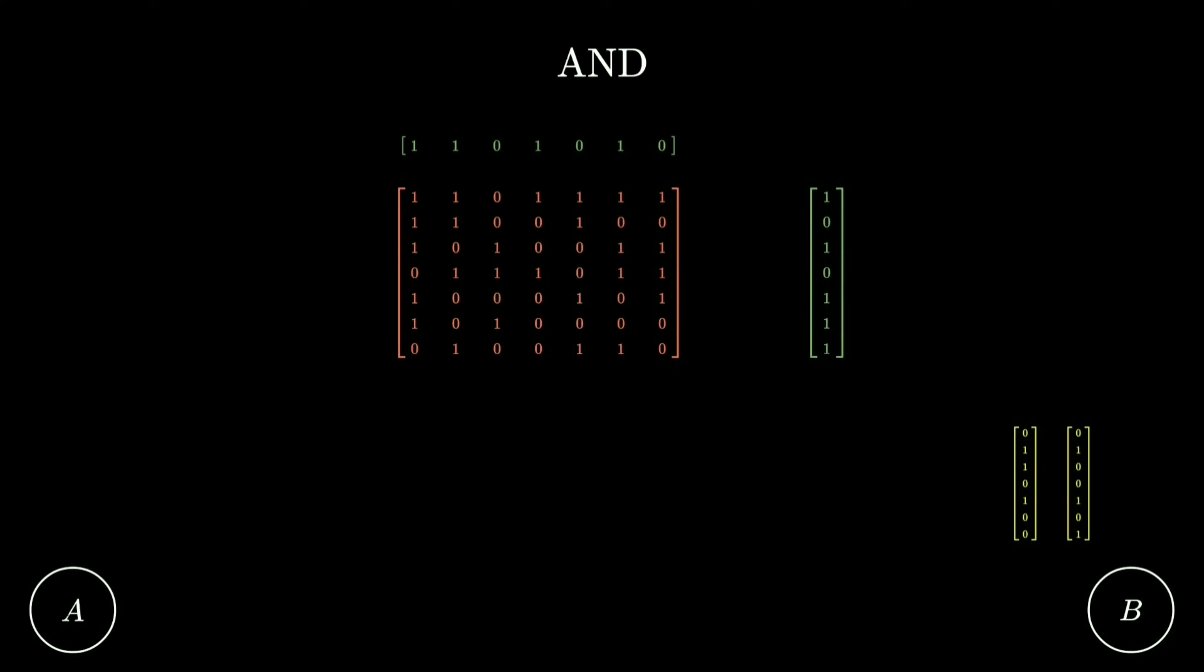In this animation, you can see the matrix and 2 secret vectors are randomly created at the site of A, the primary sender, while 2 different secret vectors are randomly created at the site of B, the primary receiver. Only the matrix is public.